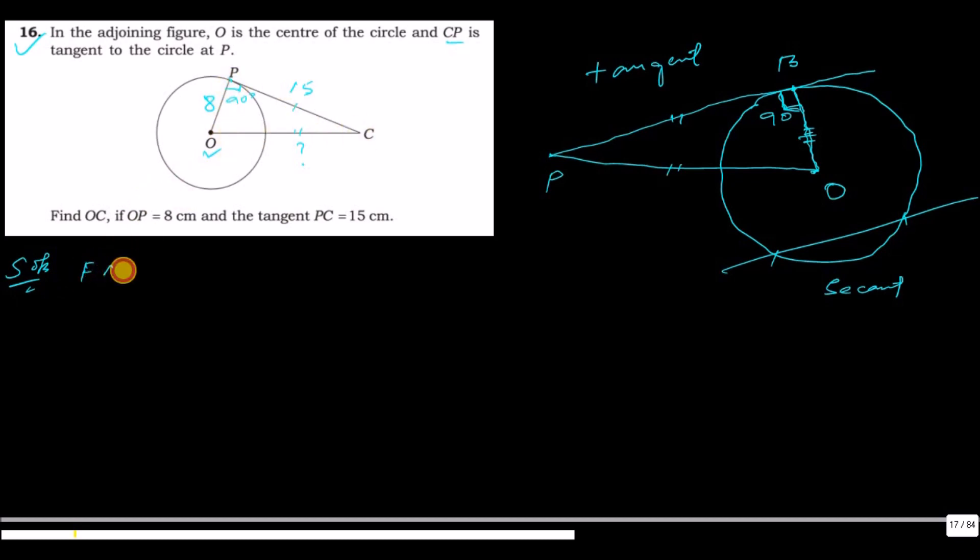From right triangle OPC, by Pythagoras theorem, the hypotenuse square equals to base square plus perpendicular square. The hypotenuse here is OC.